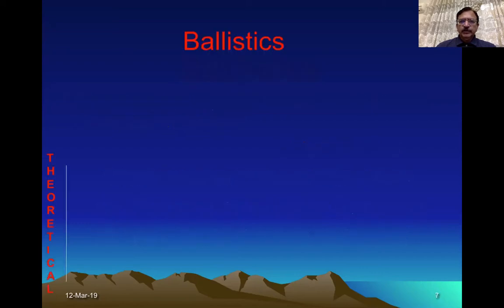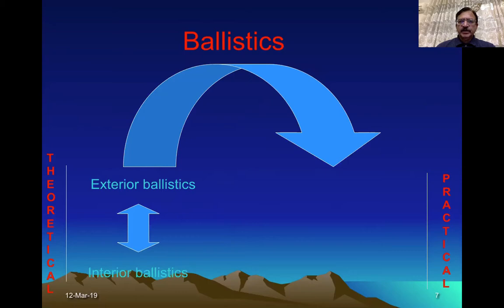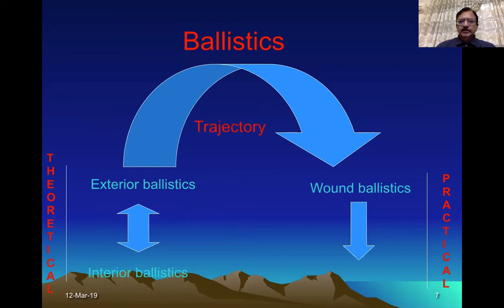Theoretically, when we talk about ballistics, we think that the bullet, after having the internal ballistics and leaving the barrel, follows a straight line. But practically, it does not travel in a straight line — it assumes a curved pathway — and then finally strikes the victim, producing wound ballistics. This curved pathway which it assumes is the trajectory of a bullet.